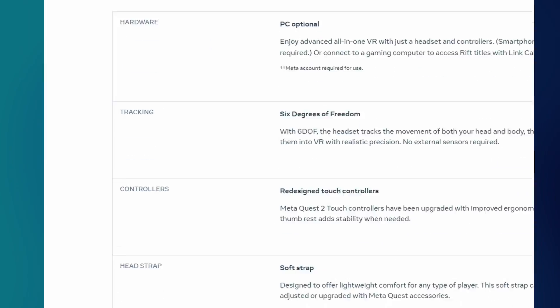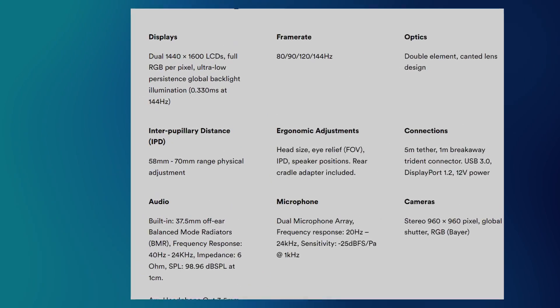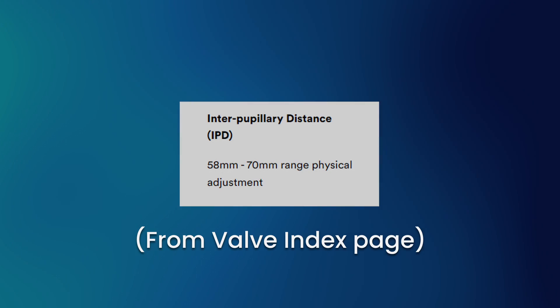If you go to any honest VR manufacturer's website — come on Meta, sort this out — you should see a small section on their spec sheet talking about the supported IPD range for their headset. There are actually several ways that a headset can accommodate for their wearer's IPD.